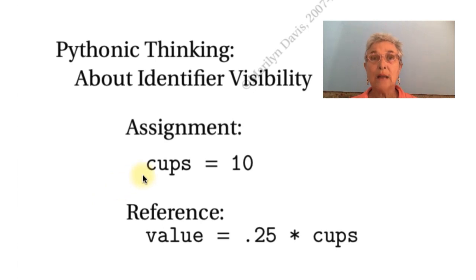Here we see cups equals ten. Cups, the identifier, is on the left side of the equal sign, so we are using it for assignment. Very different is when we're using it for reference, and it is not on the left side of an identifier and it is not being changed in memory. We are only referring to what's there, taking a look at what's there. These two concepts you have to keep very clear in your mind when you're a Python programmer: reference and assignment, assignment and reference.